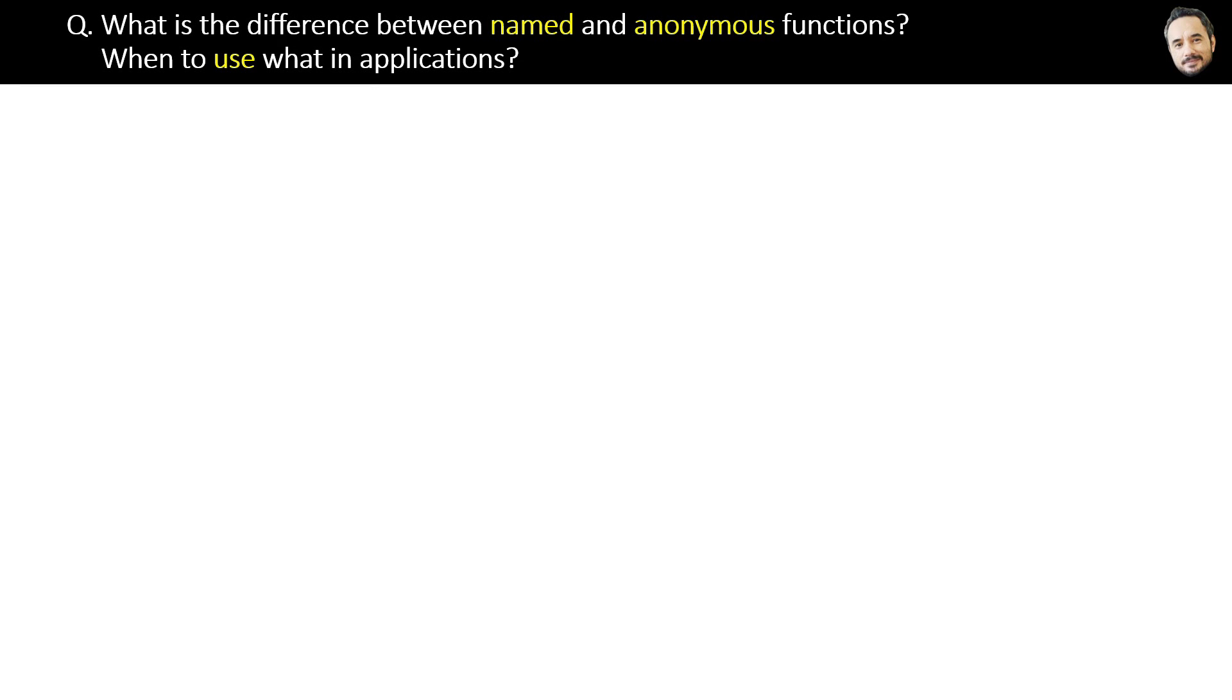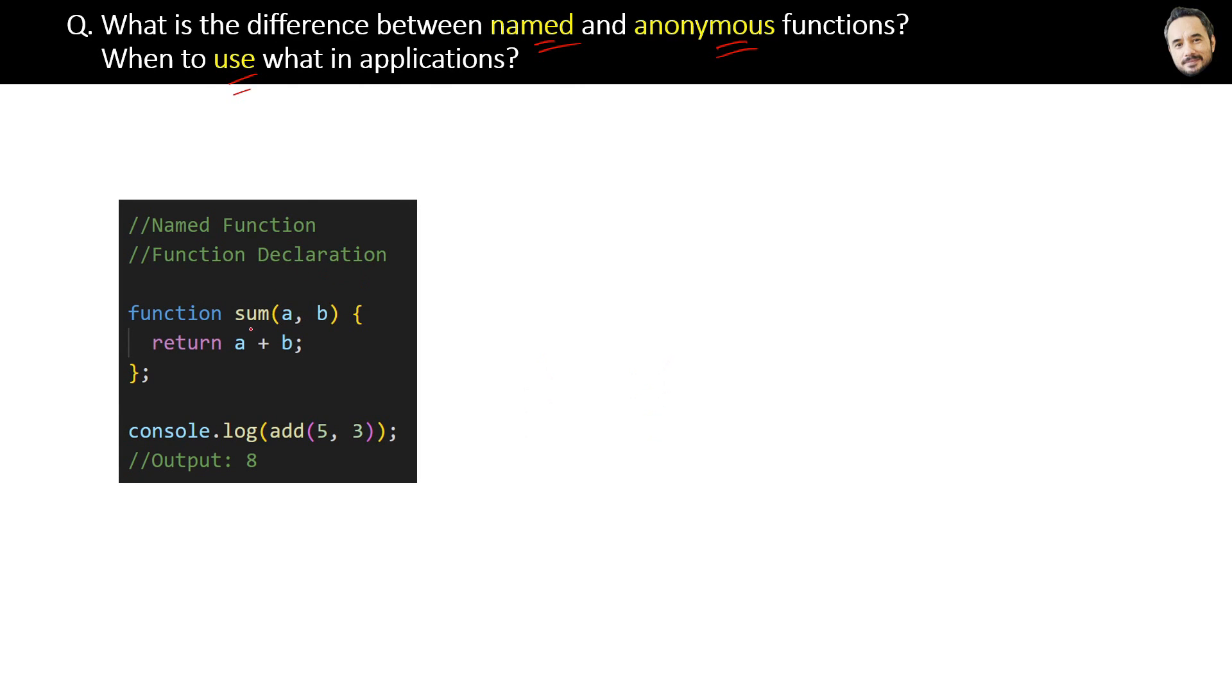What is the difference between named and anonymous functions? When to use what in applications? You already know about named functions. Here is the code and this is the most basic type of function. The definition is: named functions have a name identifier.